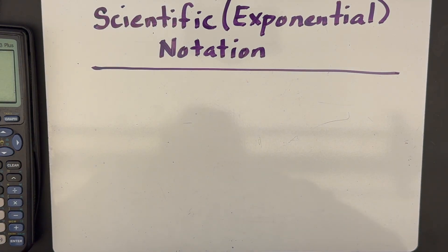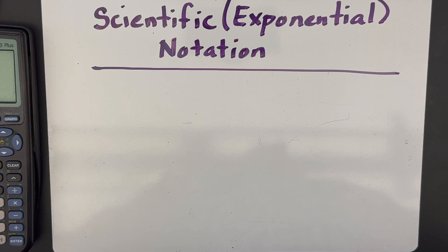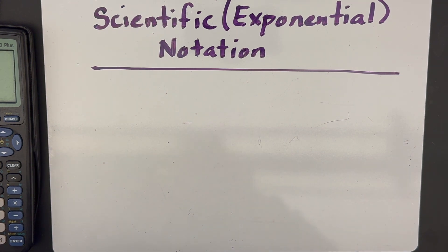Scientific notation is just a way of representing very large and very small numbers so that you don't have to write them all the way out, which can be a problem if you're talking about something like the number of atoms, or the mass of one atom, or the distance from here to the sun — things that would be very large or very small numbers.